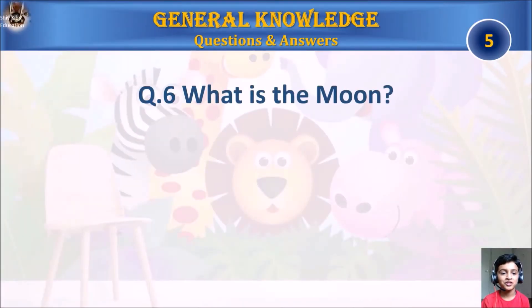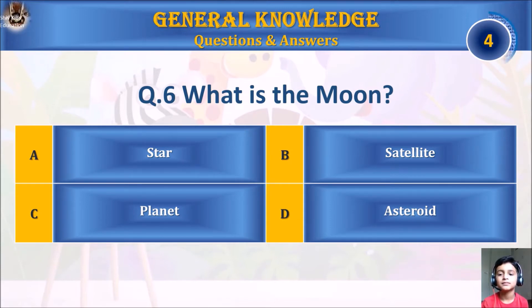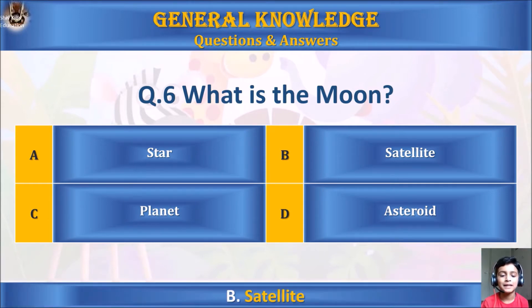Question 6: What is the Moon? A. Star, B. Satellite, C. Planet, or D. Asteroid. Your time starts. The answer is B. Satellite.